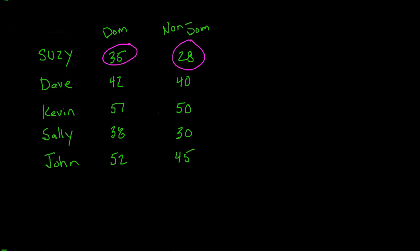So the key thing here is, I don't care what Susie did with her dominant hand. I don't care what Susie did with her non-dominant hand. I care about the difference because I'm interested in, is there a difference between her dominant and non-dominant hand? So what I really care about is the negative seven. Negative seven is the difference between her non-dominant and dominant hand. For Dave, his difference was negative two. For Kevin, his difference was negative seven. For Sally, her difference was negative eight. And for John, his difference was negative seven as well.